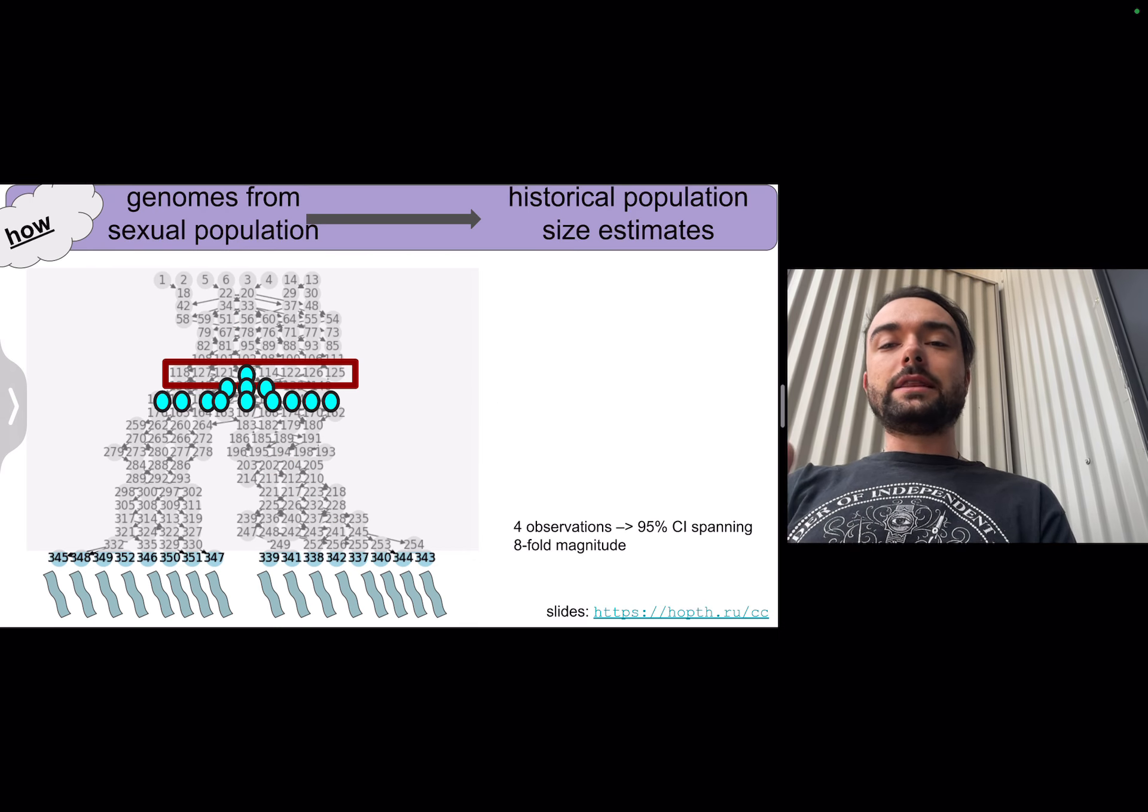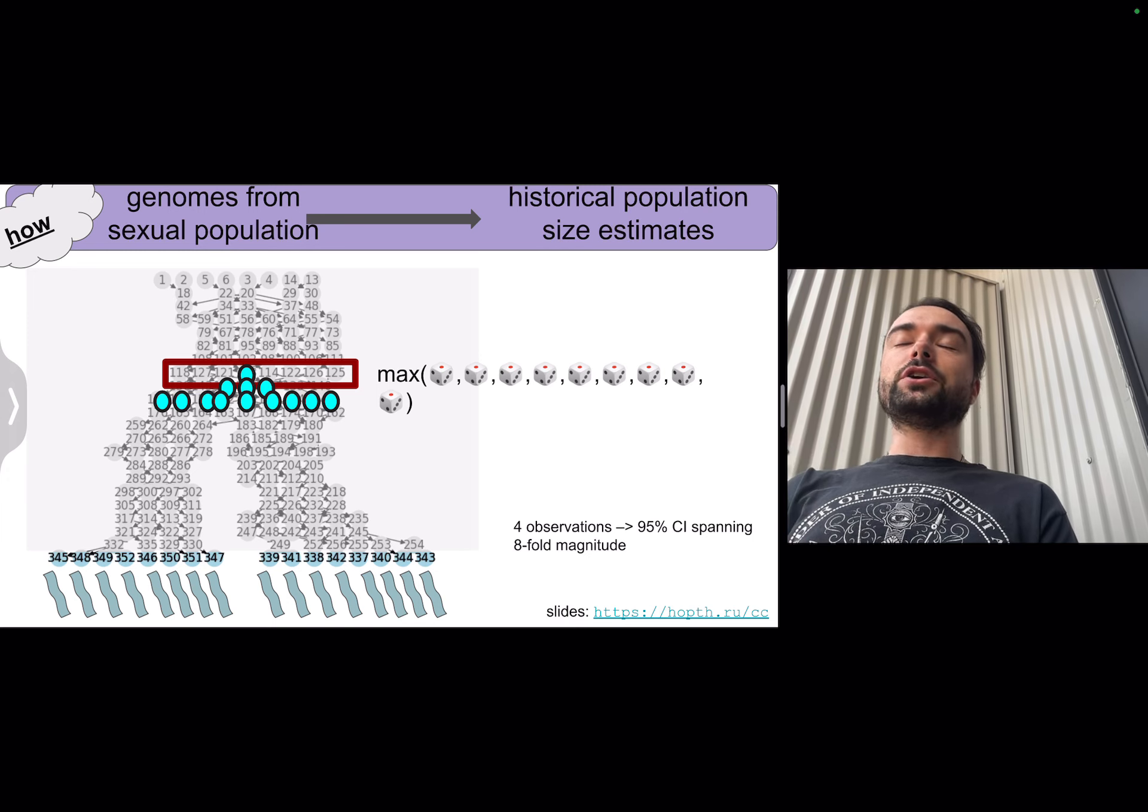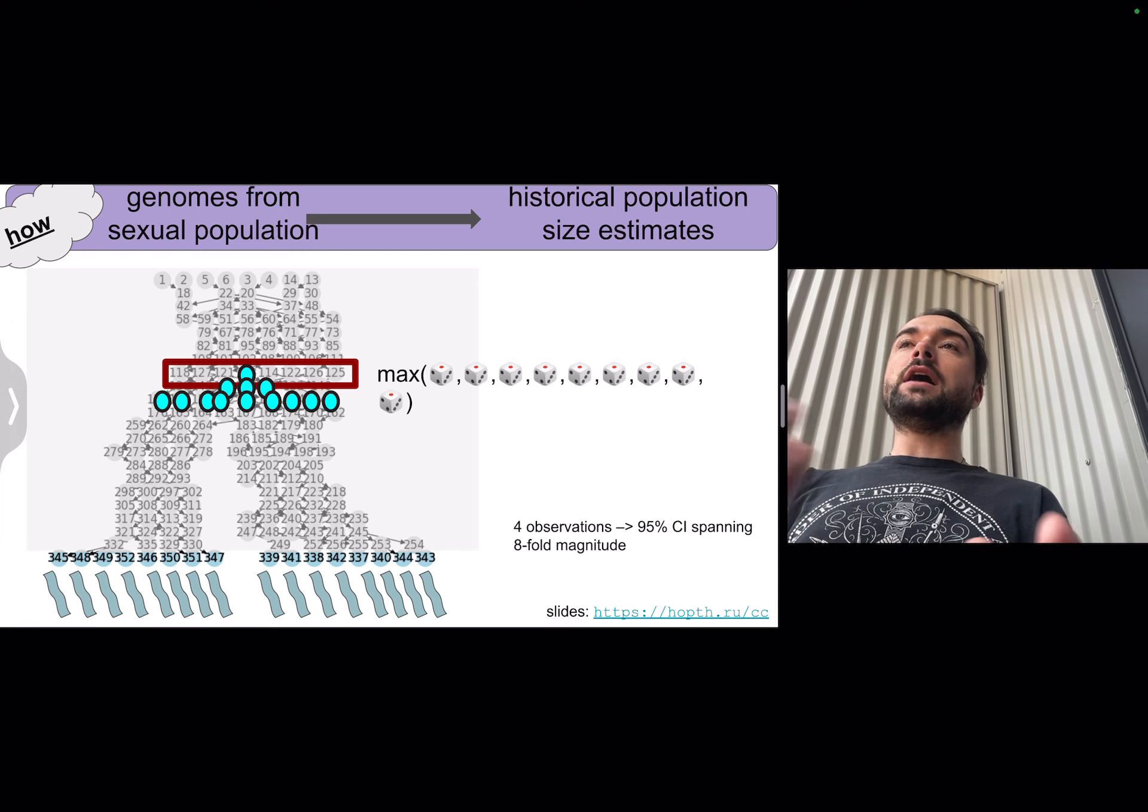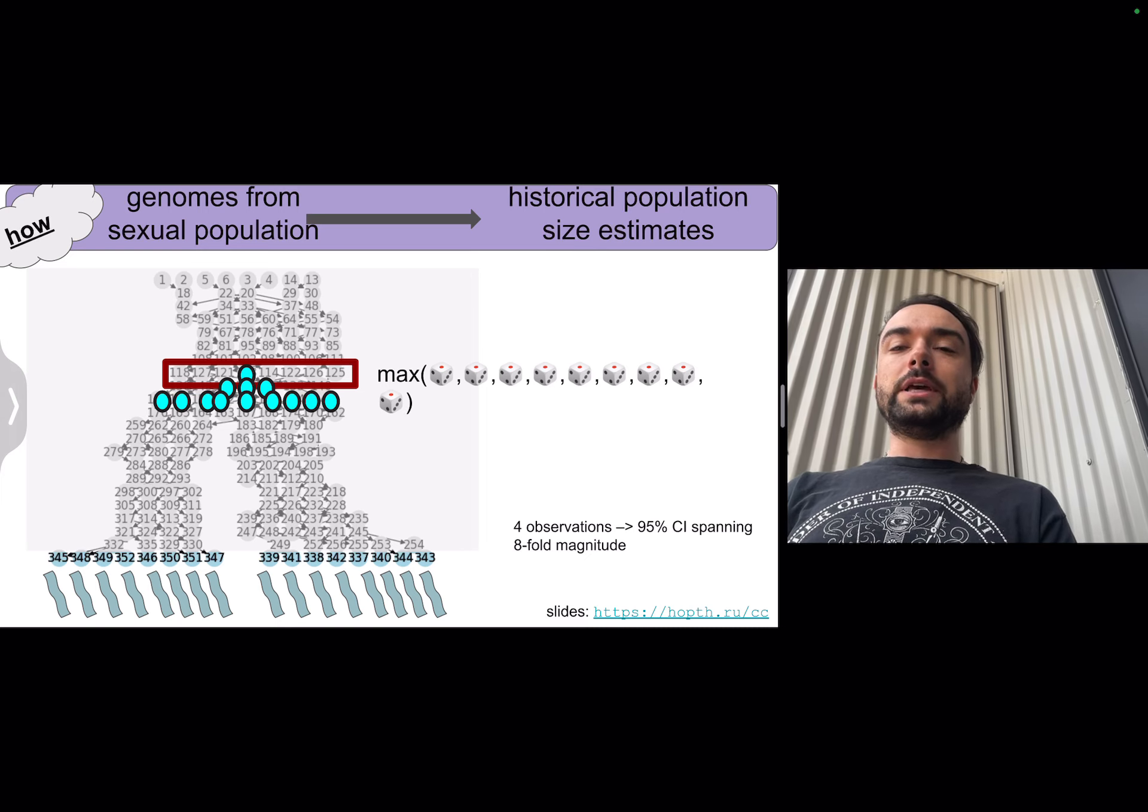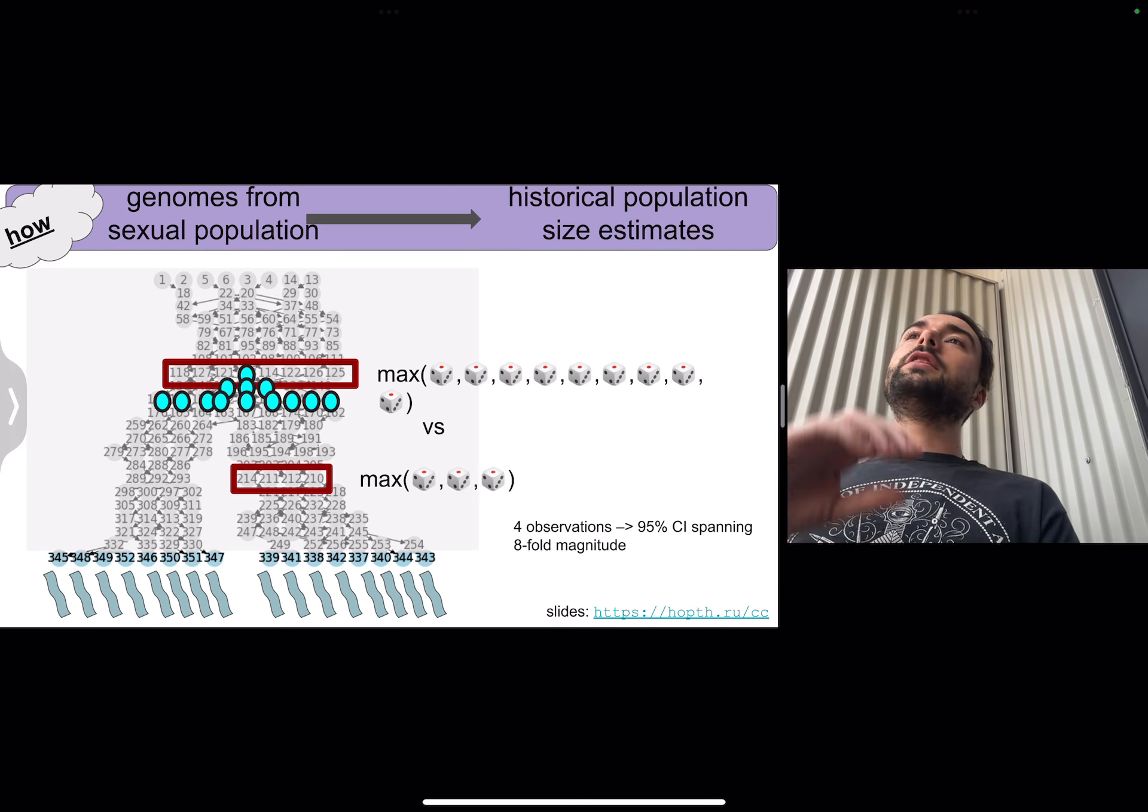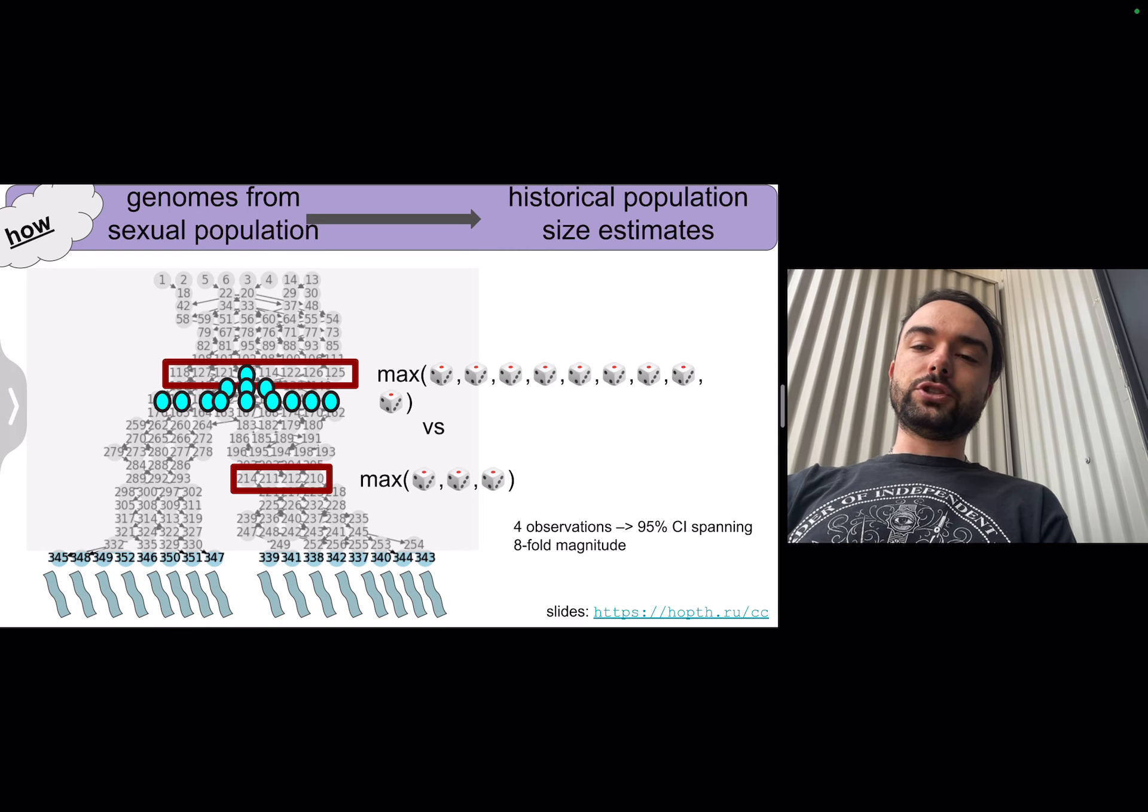How we can get at this is by thinking about the generation of the fingerprint that fixes as being drawn from a number of random samples that is equivalent to the population size. The idea being the larger the population size, the more chances we're going to have to draw really big fingerprints. And so on net, the fingerprints that fix in large populations are going to be bigger than the ones that fix in smaller populations.